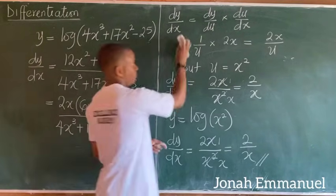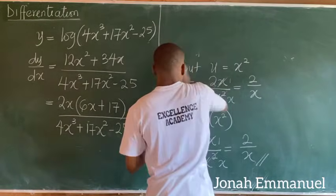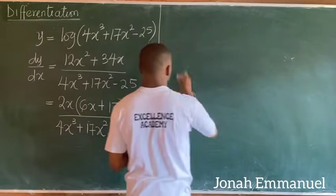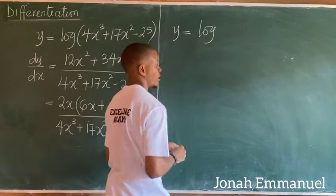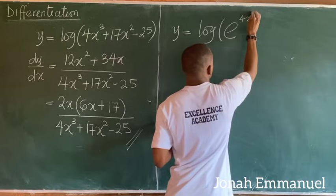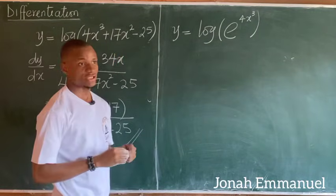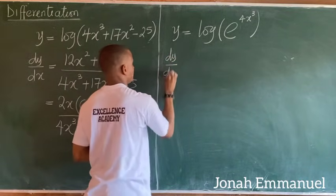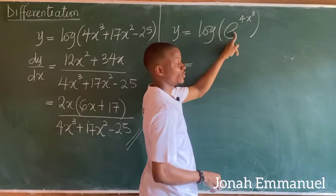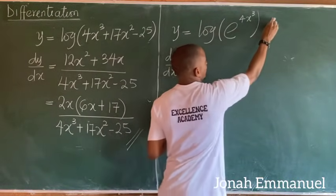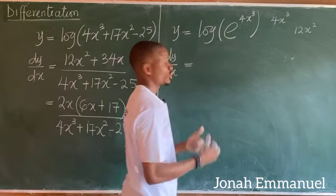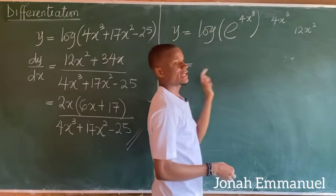We'll try one more example. Let y equal log of e^(4x³). To differentiate this, dy over dx requires differentiating e^(4x³). Using the exponential differentiation shortcut: differentiate the index 4x³ to get 12x², then attach it to the original exponential.